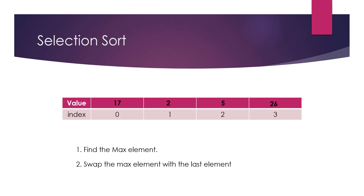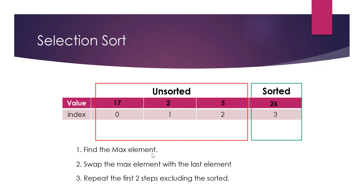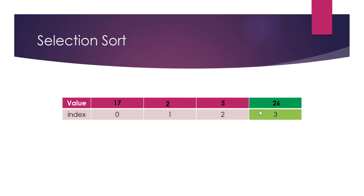Once we complete this step, the last element is now in its correct sorted position. The remaining elements are still unsorted. Since the sorted part is handled, we only need to repeat the same two steps — finding the maximum and swapping — on the unsorted part of the array.